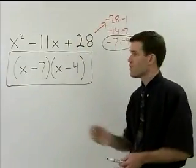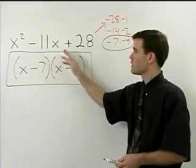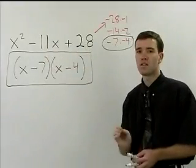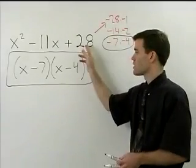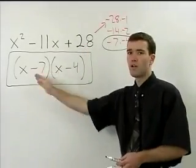Remember that if your middle term is negative and your constant term is positive, you're going to use the negative factors of your constant term for your two binomials.